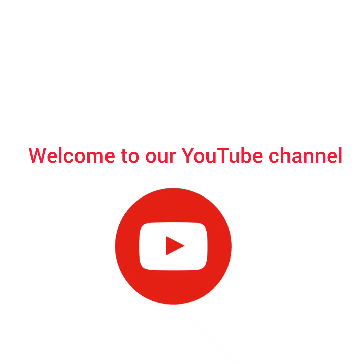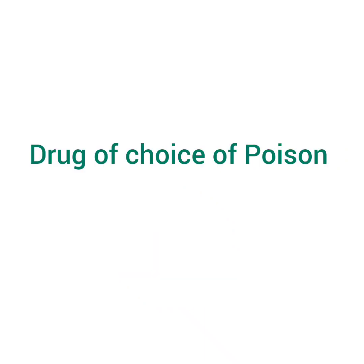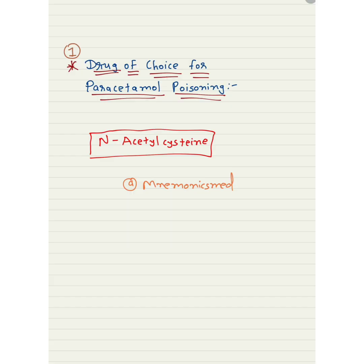Welcome to our YouTube channel Manomics Med. Today we will learn about the drug of choice for poisons. The first poison is paracetamol poisoning — the drug of choice is N-acetyl cysteine. Remember N-acetyl cysteine for paracetamol poisoning.